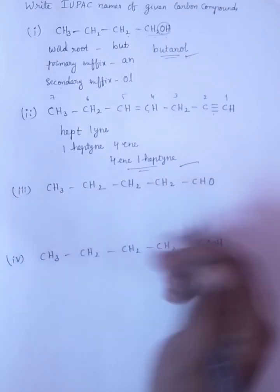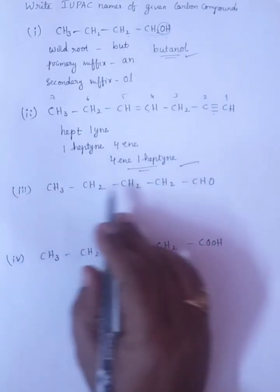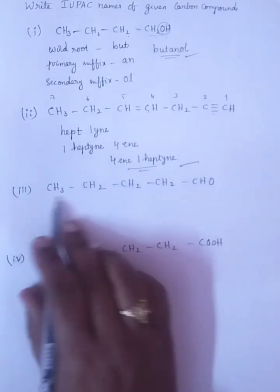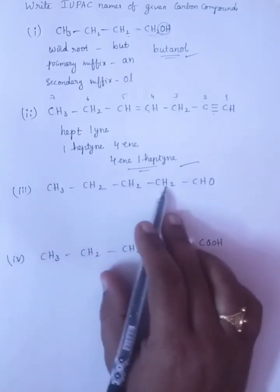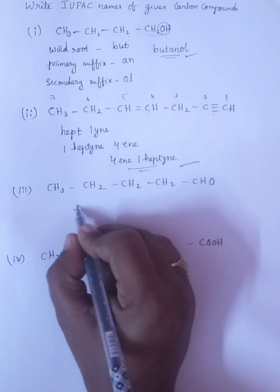Next one. Count the number of carbons: 1, 2, 3, 4, 5. You can go from this side or this side. So totally how many? 1, 2, 3, 4, 5. Nothing but PENT.